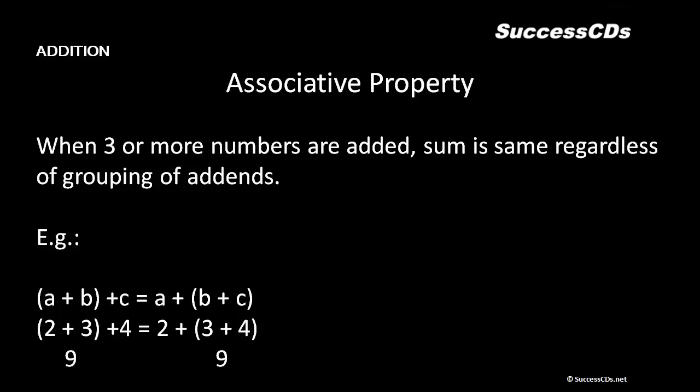That means for a plus b plus c, if I first add a plus b and their result is added to c, it is the same as if I add b plus c first and their result is added to a. For example, two plus three is five, and five plus four gives nine. Likewise, three plus four is seven, and seven plus two is also nine. The result is the same — this is the associative property.